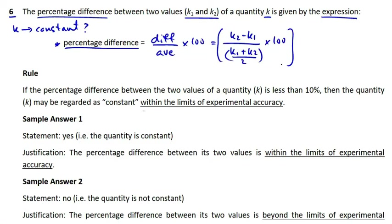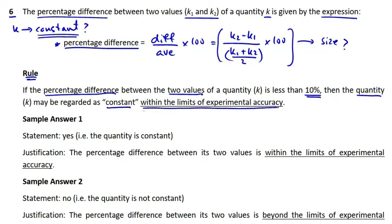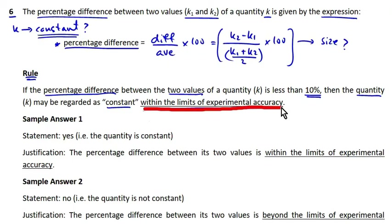Whether k may be regarded as constant depends on the size of this percentage difference. The rule says: if the percentage difference between the two values of a quantity is less than 10%, then the quantity may be regarded as constant within the limits of experimental accuracy.